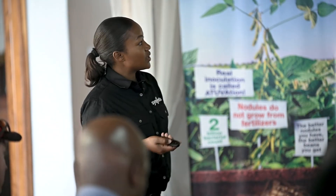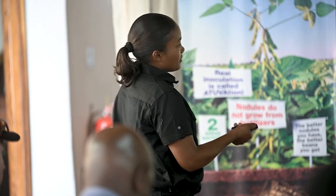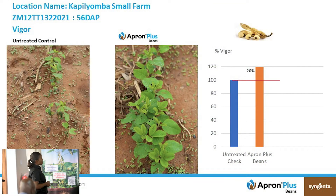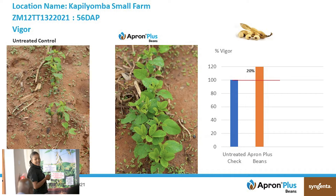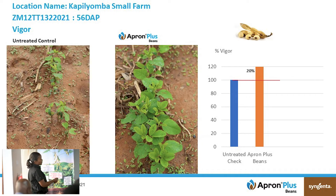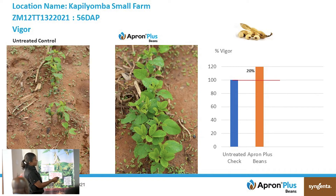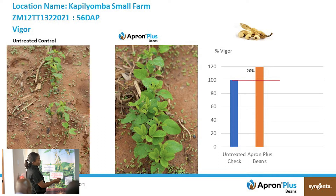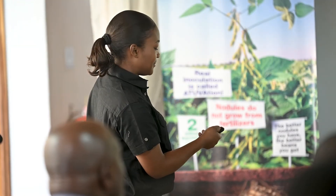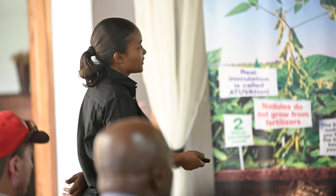Another parameter we're looking at is vigor. These were planted on the same day and given the same conditions — fertilizer, water. But if you look at this plot you can tell that the vigor is less, and even the plant count has been affected. This plot was treated with Apron Plus Beans, and you can see the vigor here. The graph shows a 20% increment in vigor, and in some plots it was even higher than 20%.